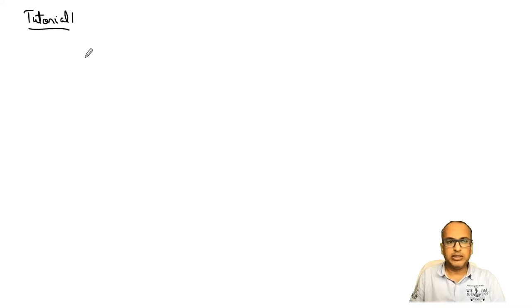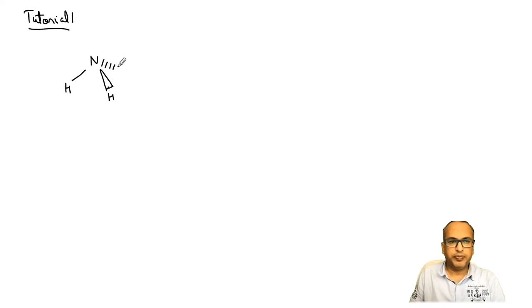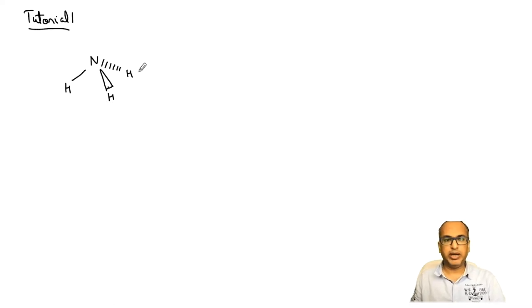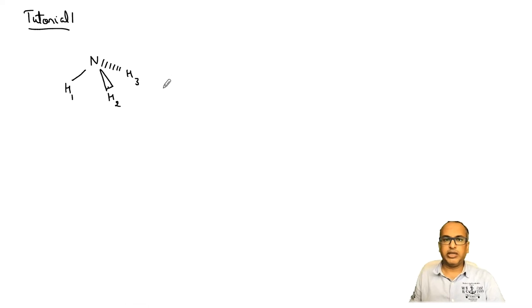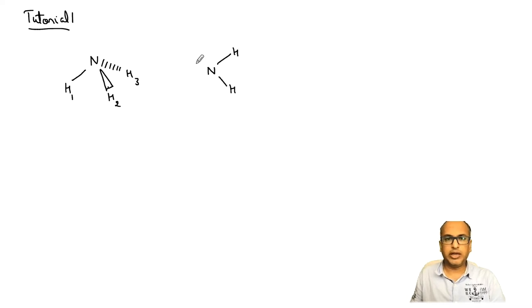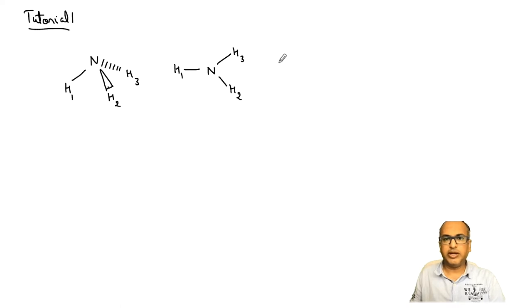Let's look at ammonia, NH3. This particular proton and nitrogen are in plane, this proton is coming out of the plane of the board, and this proton is going behind the plane of the board. Now if I see what different types of proper axis of rotations are present, I can also draw this as if I'm looking from the top.